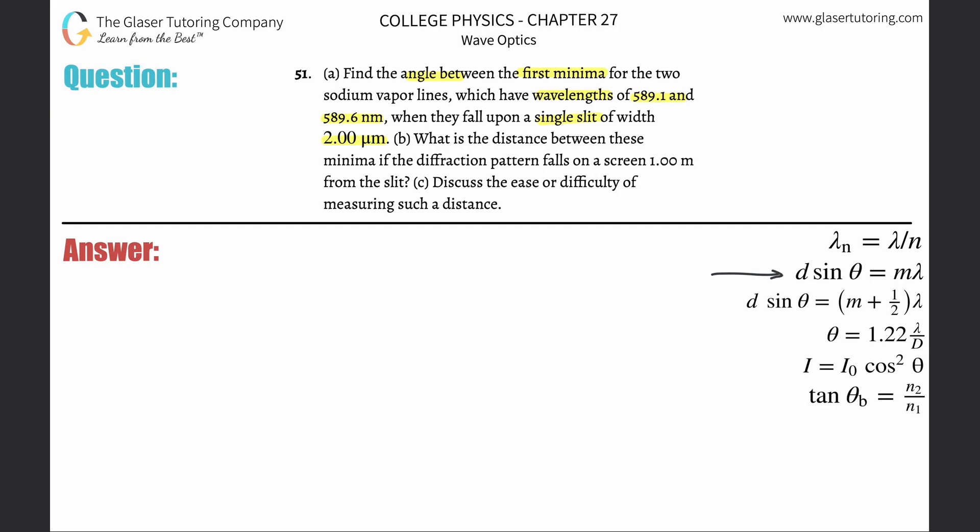So this is the minima formula for a single slit diffraction. Basically what we need to do is create two equations. D sine theta equals M lambda, and this equation will represent the details for lambda 1. We'll call this wavelength lambda 1. This would be the order, the first minima, and this would be that angle associated with it, and that would be the distance between the slit.